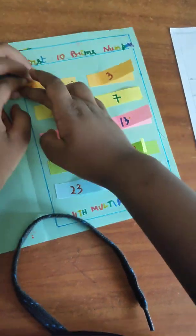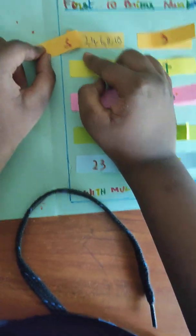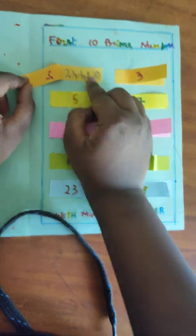So the multiples of 2 are 2, 4, 6, 8, and 10.